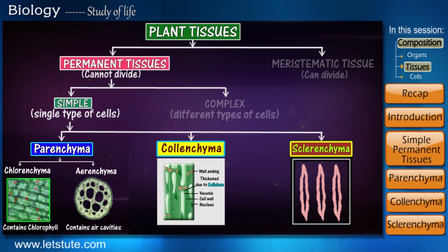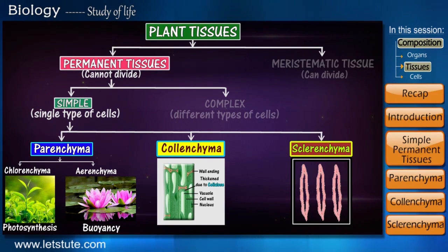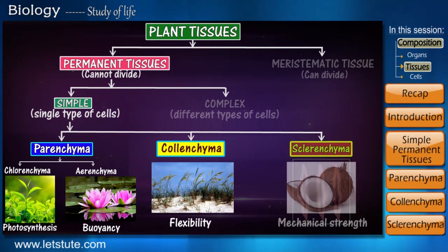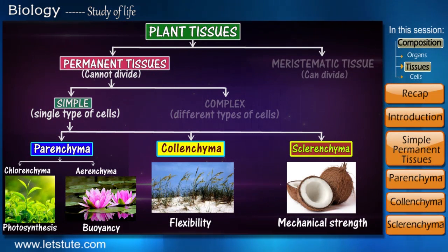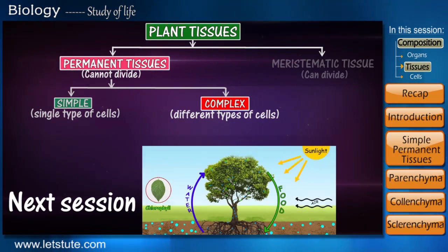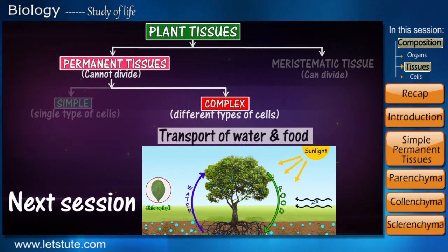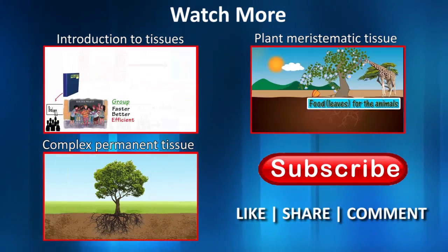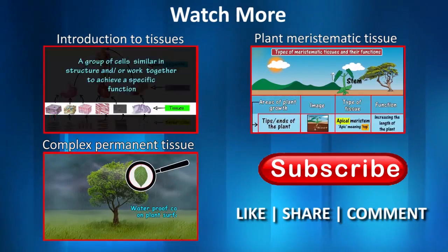So up till now we have seen the tissues involved in storage of food, which is parenchyma, and the tissues which provide flexibility and mechanical support to the plant, which are colenchyma and sclerenchyma respectively. These are all part of simple permanent tissues. In our next session we'll be studying the complex permanent tissues and the functions they perform for plants. Don't forget to like our session, share it with your friends, comment, and subscribe to our channel for more such interesting sessions.